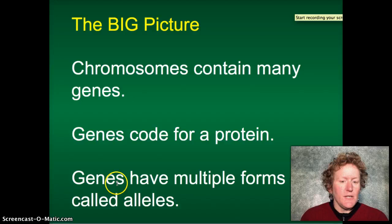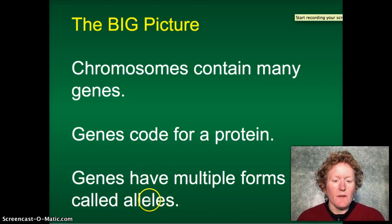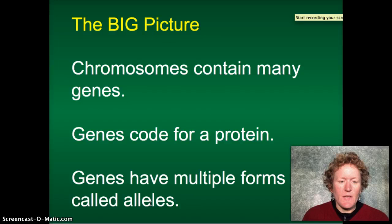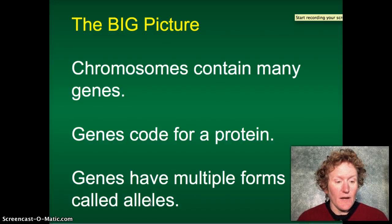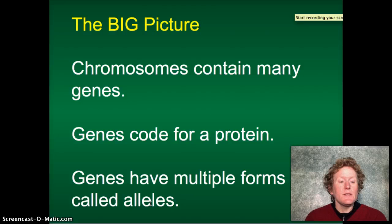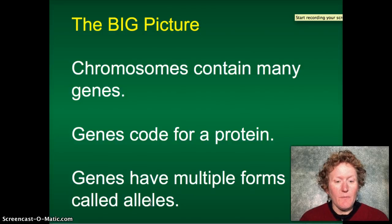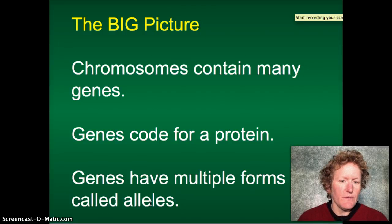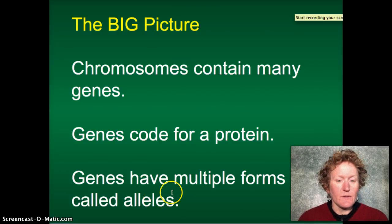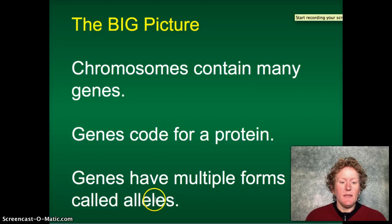Genes have multiple forms or versions called alleles. Just like ice cream comes in many flavors — like chocolate, vanilla, and strawberry — genes have many options. You can have red flowers, blue flowers, or yellow flowers, and those are all alleles of the flower color gene.